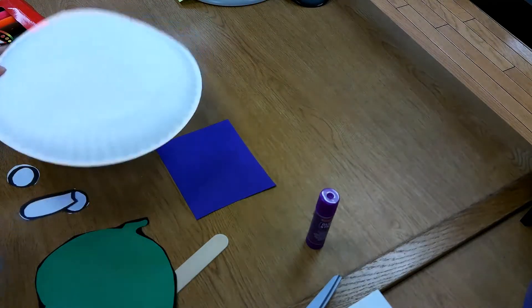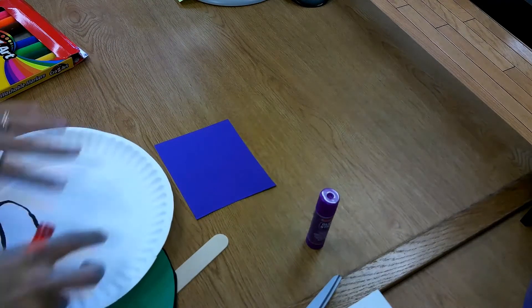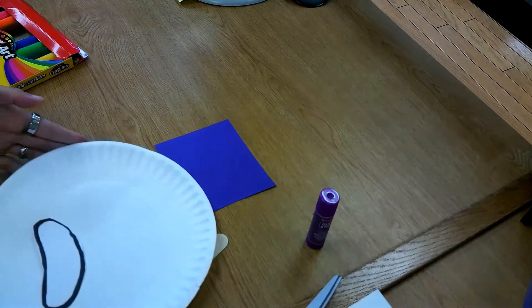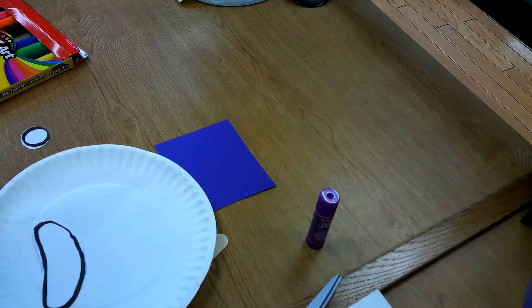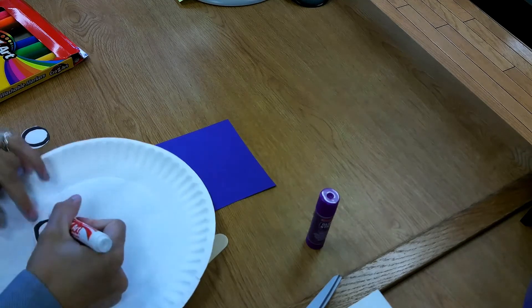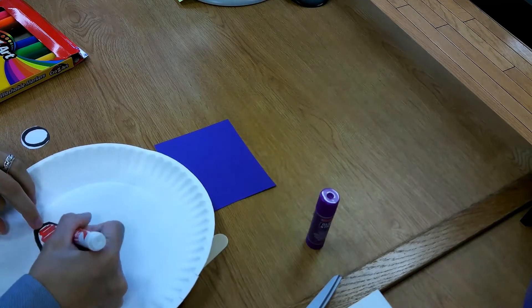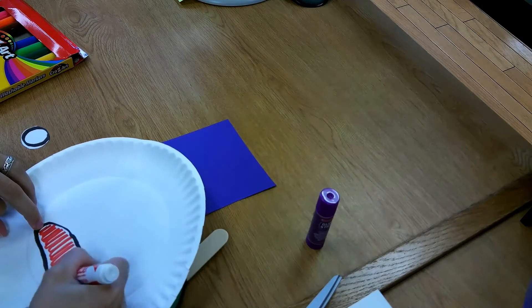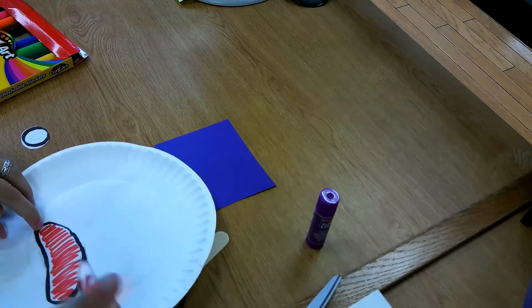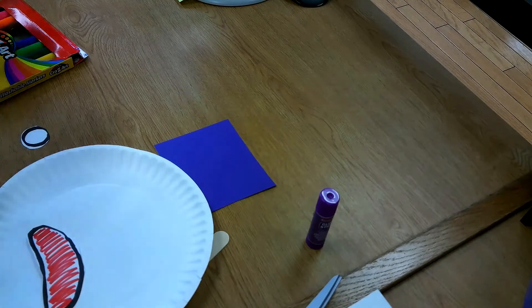So I'm going to flip my paper plate to where the curvy upside is facing me so that I can color my mouth red. And if I get any on the plate, it's okay because I'm going to flip it over later.